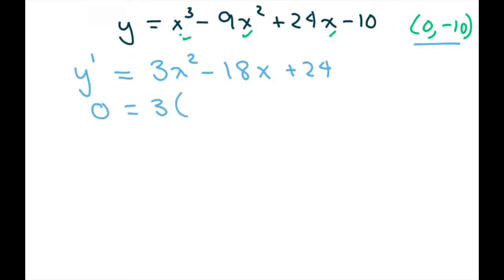So let's find the critical points. You can divide the 3 out, so you get 0 equals 3 times (x minus 4) times (x minus 2). So we have x equals 2 and 4.